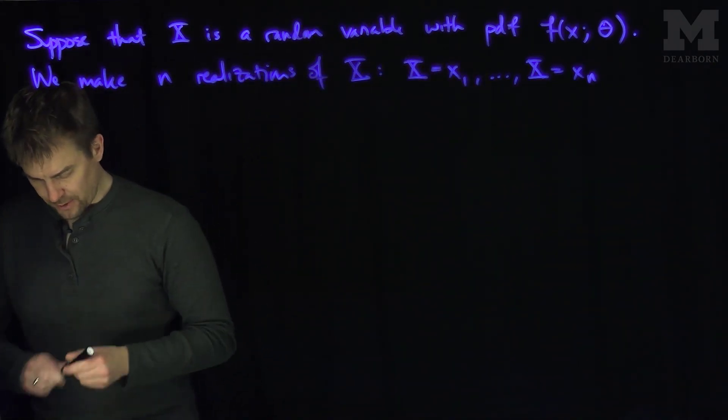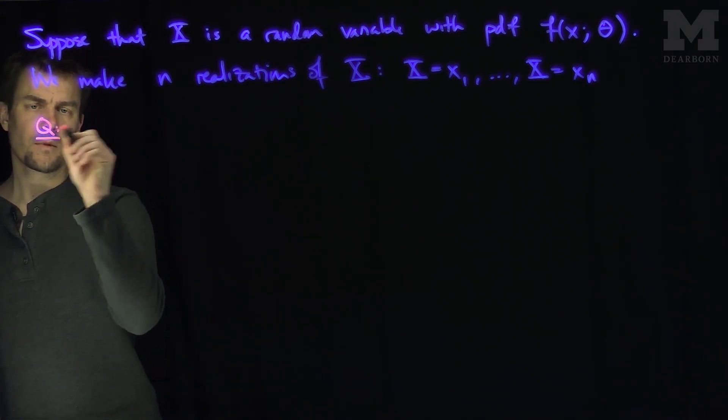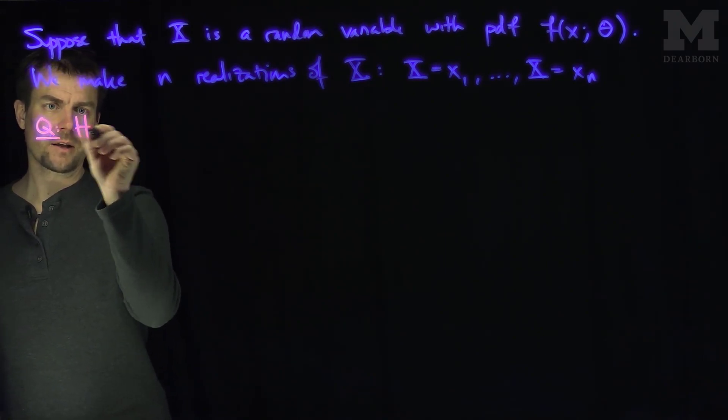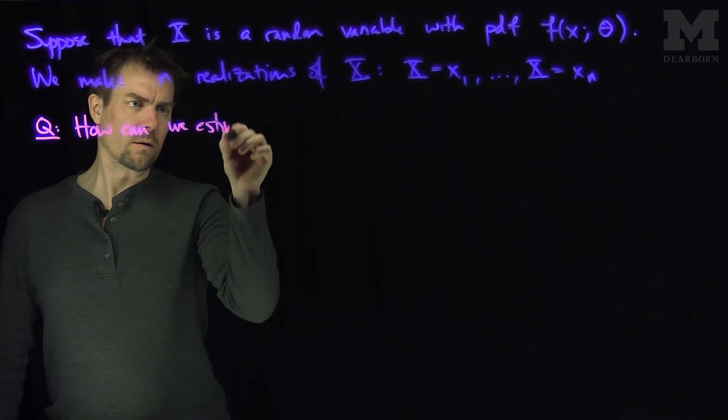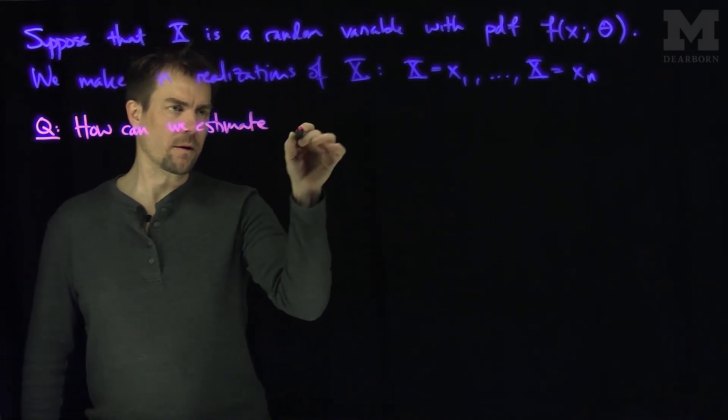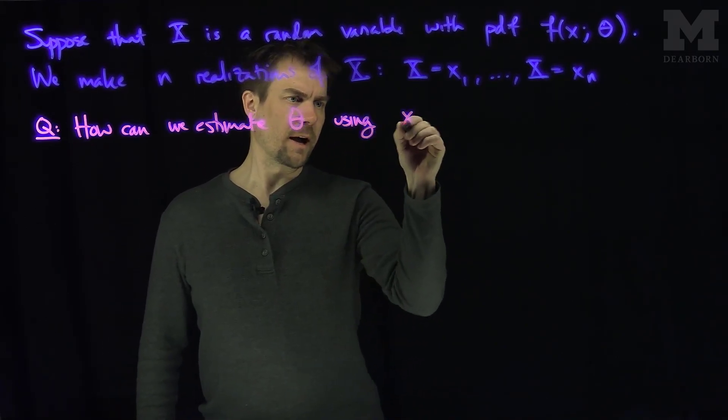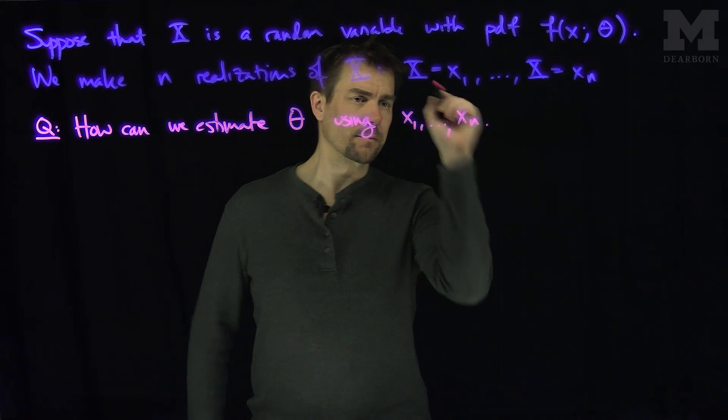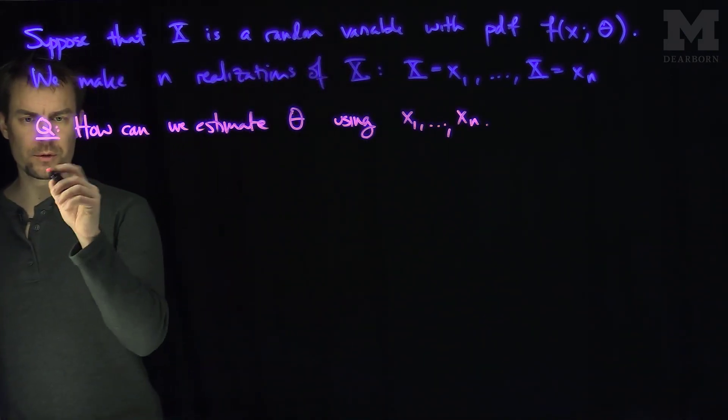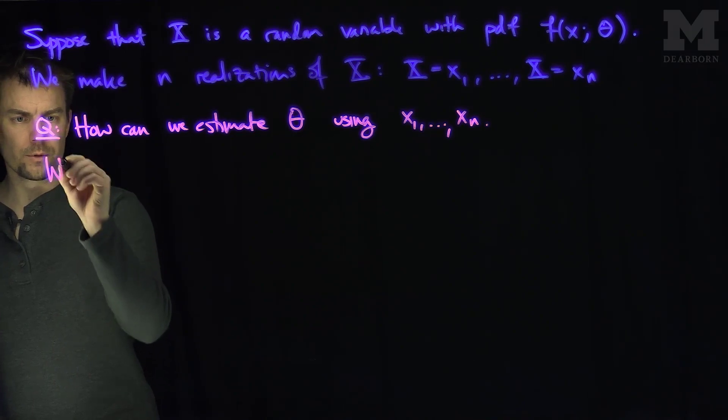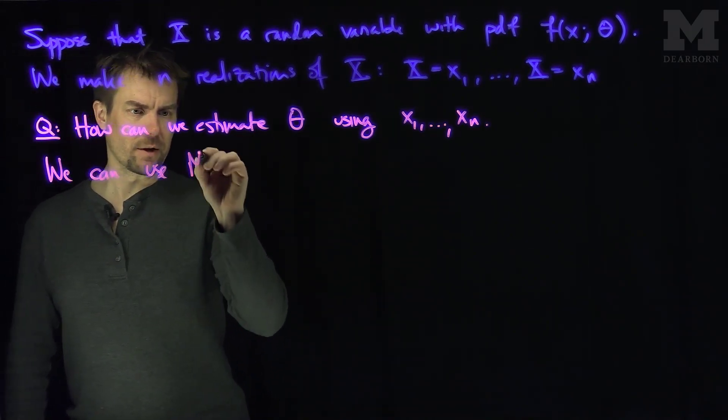So our question with maximum likelihood estimation is: how can we estimate theta using x1 through xn? One very good approach is to use maximum likelihood estimation.